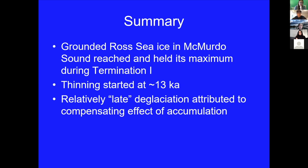To summarize: the grounded ice reached its maximum in the McMurdo Sound area during Termination One about 18–19,000 years ago and held that position for about 6,000 years. Thinning occurred after that when the effects of marine drawdown overcame the effect of accumulation rise. This relatively late maximum and, by implication, also late deglaciation was attributed to this compensating effect of accumulation.